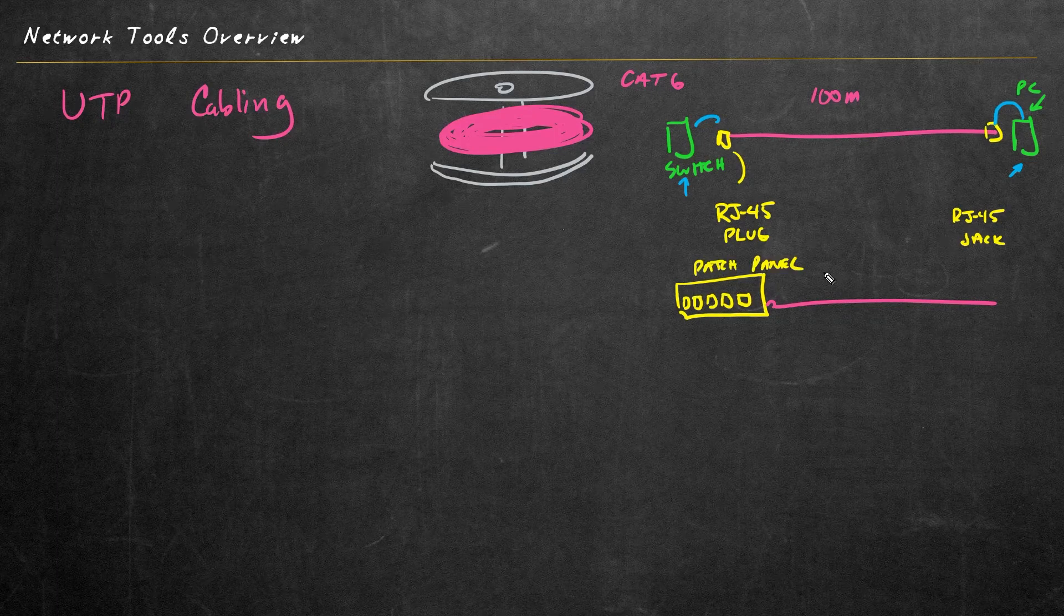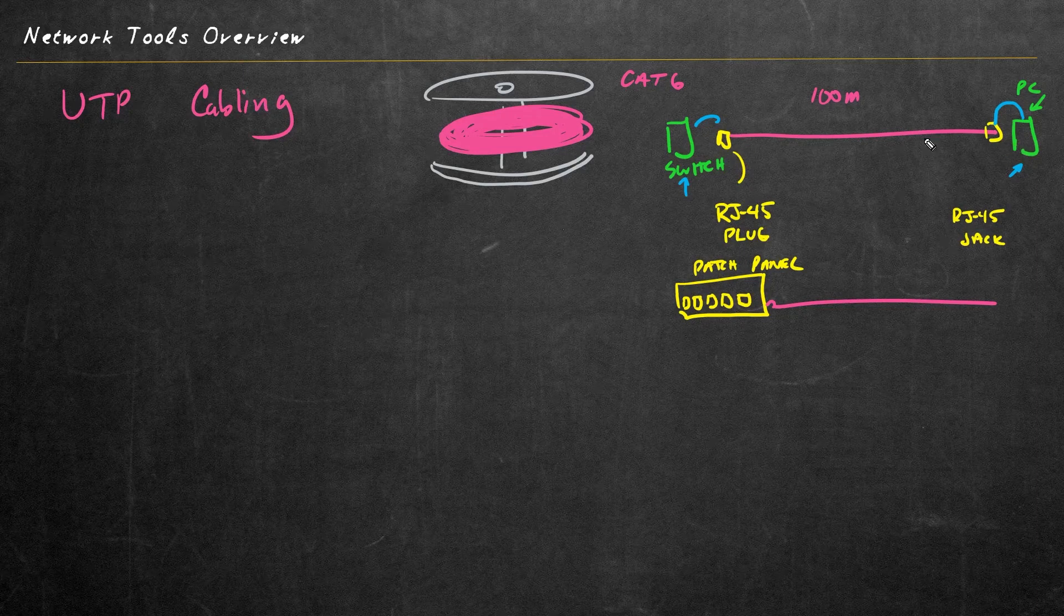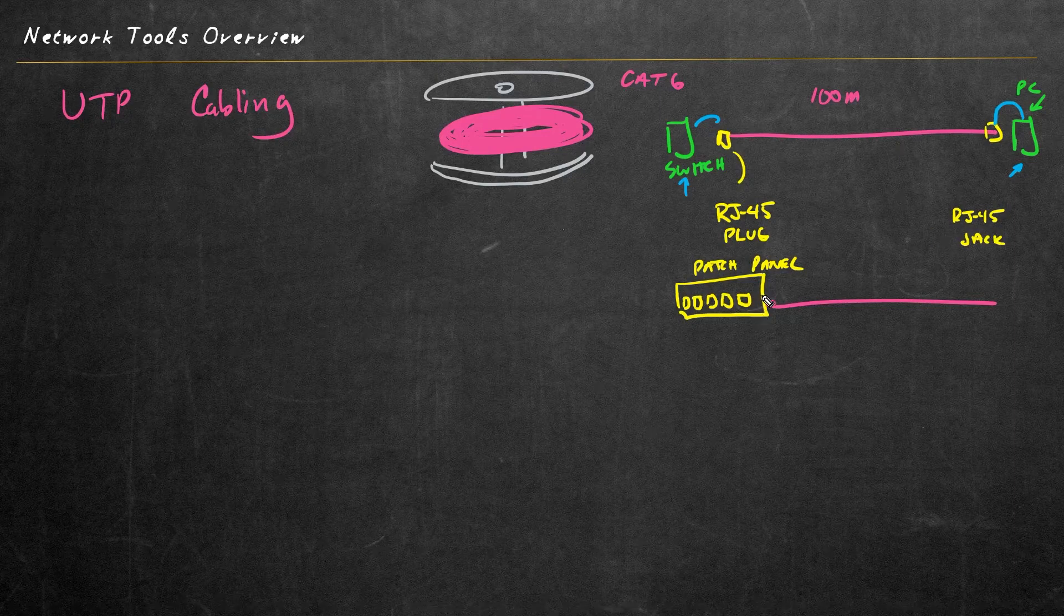So again, we might ask, okay Keith, great, we have several different ways of terminating an Ethernet cable with an RJ45 plug, with an RJ45 jack, or a patch panel, which is like a whole bunch of RJ45 jacks. So what does that got to do with network tools?